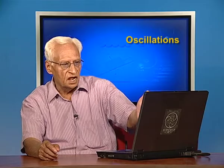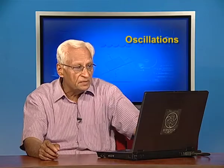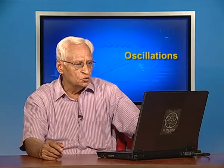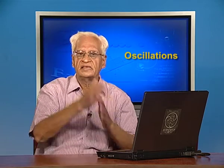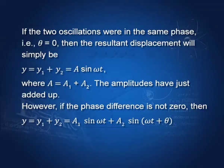Suppose the two simple harmonic motions are in the same direction: y1 = a1·sin(ωt) and y2 = a2·sin(ωt + θ), where θ is a possible phase difference. If the two oscillations have the same phase, θ = 0, then y = y1 + y2 = (a1 + a2)·sin(ωt), so the amplitudes simply add up. If two SHMs are in the same direction, same phase, and same frequency, the resultant amplitude is the sum of the two amplitudes.